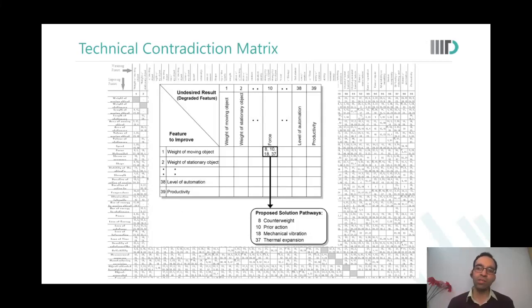So he made a lookup, a matrix lookup which appears something like this. And in this lookup table he put in, in every box, he put in some inventive principles which are most commonly used to solve this kind of a problem. For example, if we wanted to improve the weight of the moving object but as a result of that the force that needed to be applied degraded, then what kind of principles, inventive principles, were used to solve them? And he gave four of them in that box.